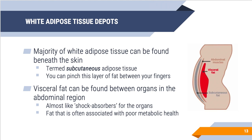Focusing on white adipose tissue storage in the body, there are two main depots. The first is subcutaneous adipose tissue — the majority of white adipose tissue — located directly beneath the skin. This is the layer you can actually pinch or feel between your fingers. Visceral adipose tissue is found between the organs within the abdominal region specifically and acts like a shock absorber for the organs. This is the type of fat commonly associated with poor metabolic health or adverse health outcomes.